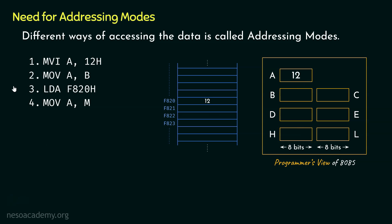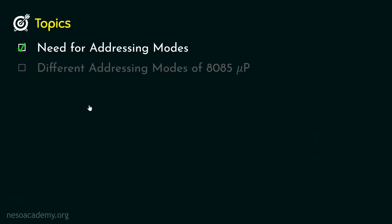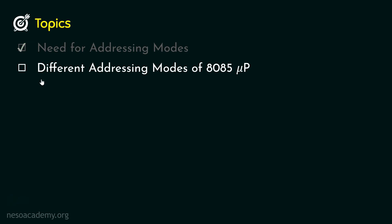So clearly, using all these ways, we can access the accumulator register. And these are the different instructions to perform the same. Now you can argue that do we really need all these? Well, we do — although they are performing the same deed, they are doing it in different kinds of ways. So that's all about the need for the addressing modes. Let's now learn the different addressing modes of 8085 microprocessor.